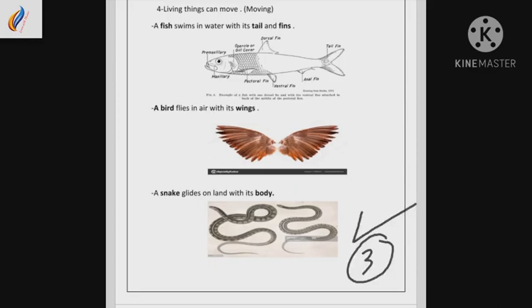What about the third picture? It's a snake. A snake glides on land with its body. What does it mean glides? Glides is to move or progress without difficulty or effort. يعني تنزلق. Snake glides on land with its body.